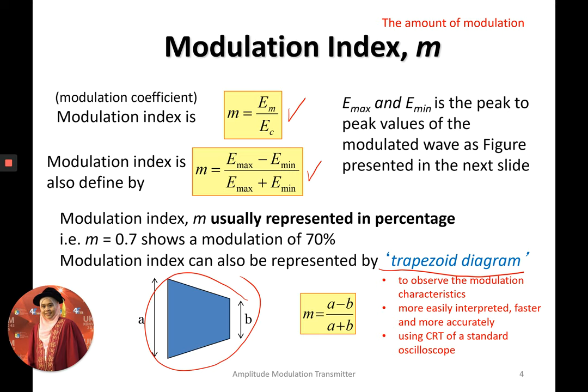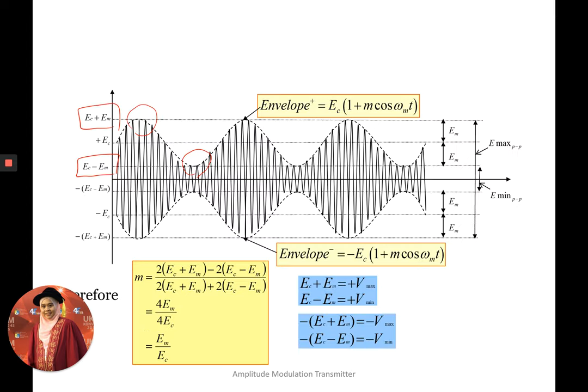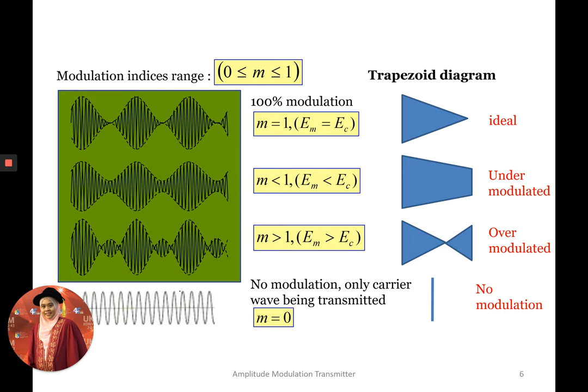If you are interested in learning more about CRT, you can find it in communication textbooks. To find the modulation index from the trapezoid diagram, you need to know the length of sides A and B, then substitute those values into the equation. The modulation index for an AM signal ranges between 0 and 1.